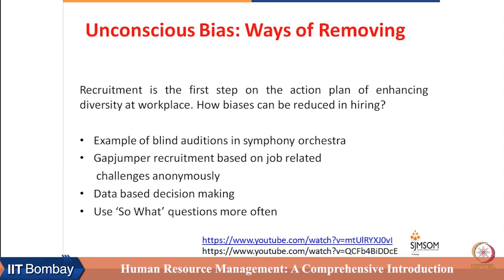Unconscious bias operates at all different stages of HR processes. For example, in recruitment, CV shortlisting and profile shortlisting is the first step. Our unconscious bias can operate even at the time of CV shortlisting, and we may end up shortlisting people whom we perceive as a better fit for the job. HR has to take extra care to ensure these unconscious biases do not get in the way of selecting candidates. There are examples showing how strongly our unconscious biases affect our decisions, and also how we can reduce them through specific practices.